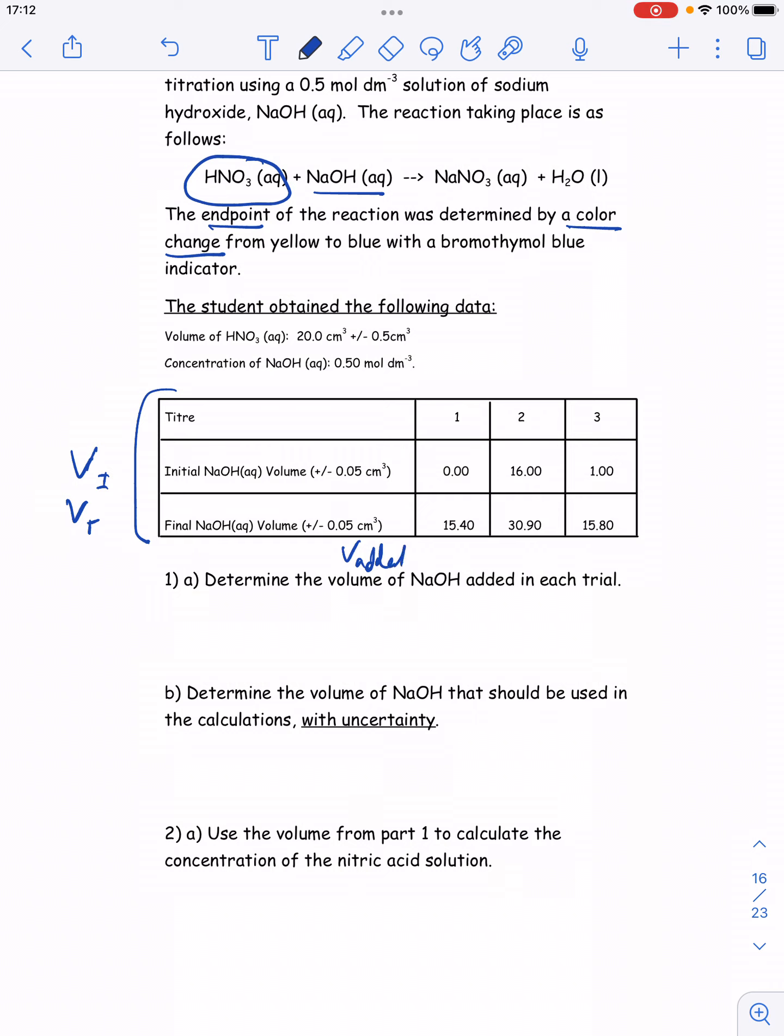So the volume added is the difference. In trial one, it was 15.4, then 14.9, and then 14.8.